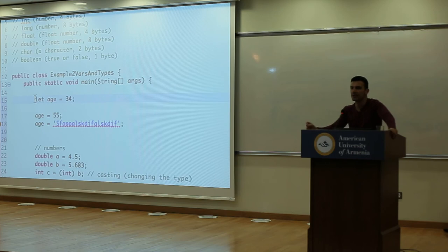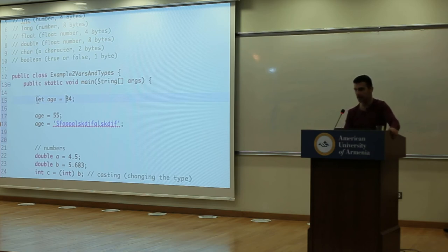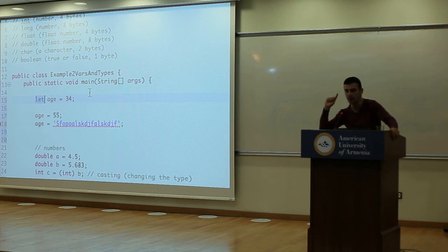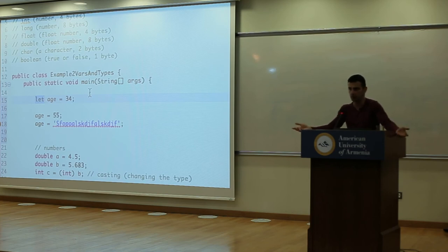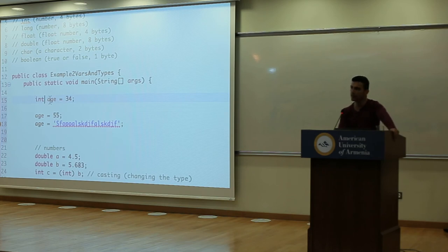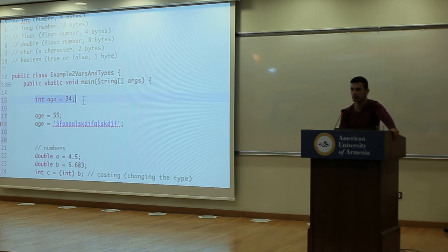In Java, we have strict typing, not dynamic typing — the types have to be exactly as stated and cannot change. So if we create a variable for age in Java, we have to say it's a number, and specifically what kind of number: integer, float, double, short, long. The one you intuitively understand is an integer. You declare it as 'int age', which means age is a variable that can take integers. So 'int age = 34' is legal because 34 is an integer.